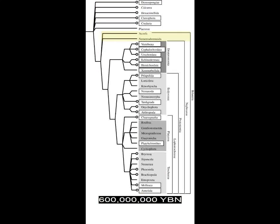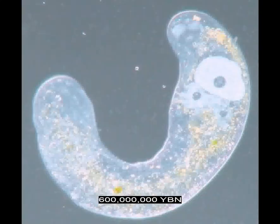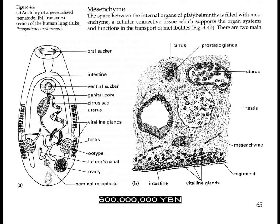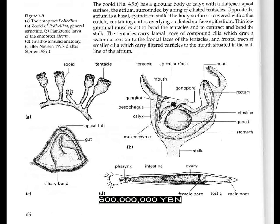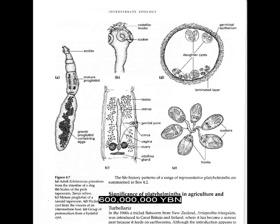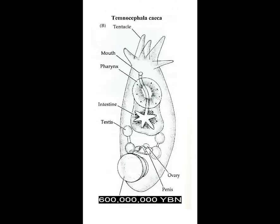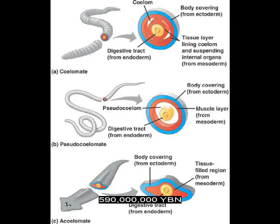The earliest extant bilaterian, Acoelomorpha — ancestor of acela flatworms and nemertodermatida. The Acoelomorpha lack a digestive tract, anus, and coelom. Flatworms have no lungs or gills and breathe through their skin. With no circulating blood, their branched gut presumably transports nutrients to all parts of their body. An intestine evolves in a bilaterian. A cylindrical gut, anus, and throughput of food evolves in a bilaterian — found in all bilaterians except Acoelomorpha and Platyhelminthes. The genital pore, vagina, and uterus evolve in a bilaterian. The penis evolves in a bilaterian. The end of the Varanger Ice Age. The coelom evolves in a bilaterian — a fluid-filled cavity that forms within the mesoderm and exists between the gut and body wall in most triploblastic animals.